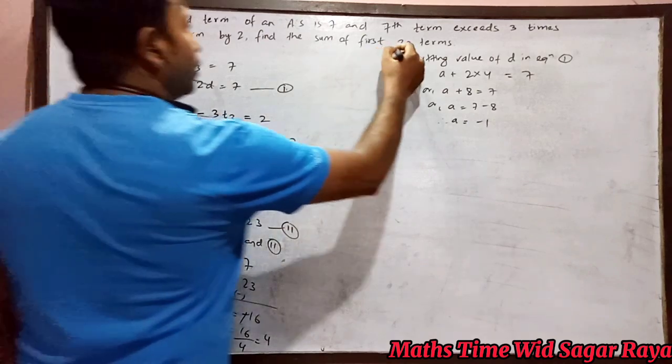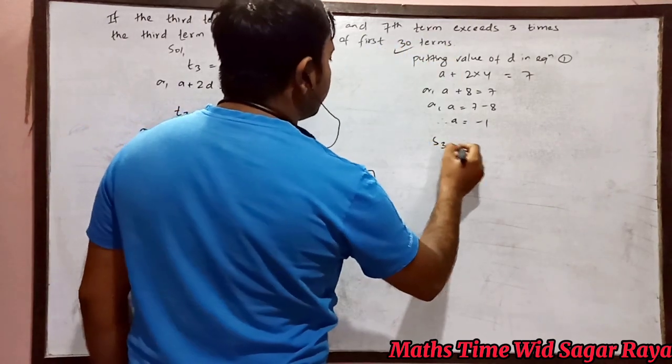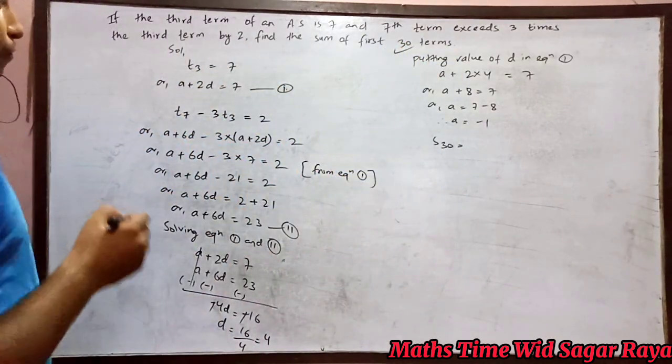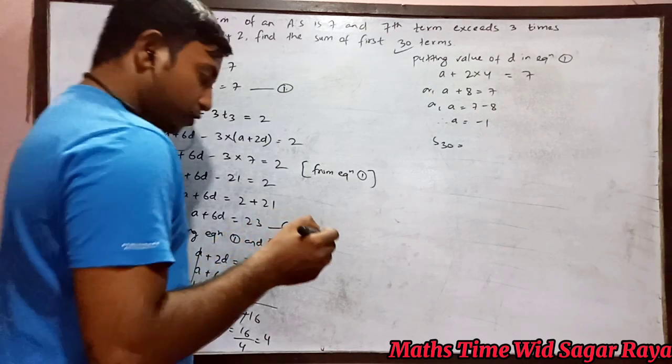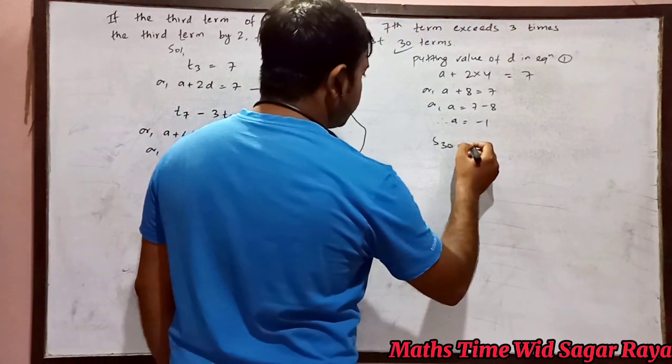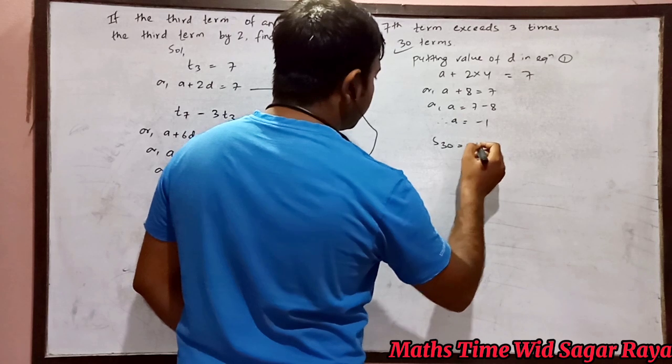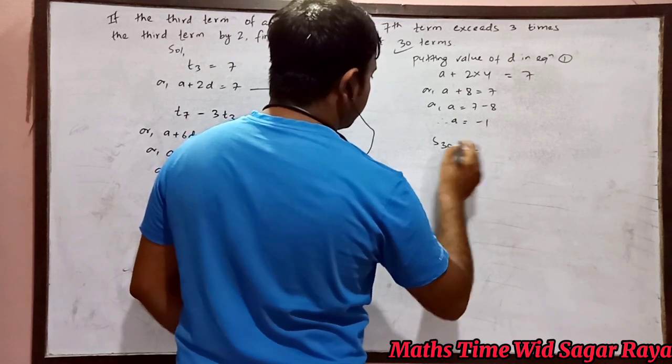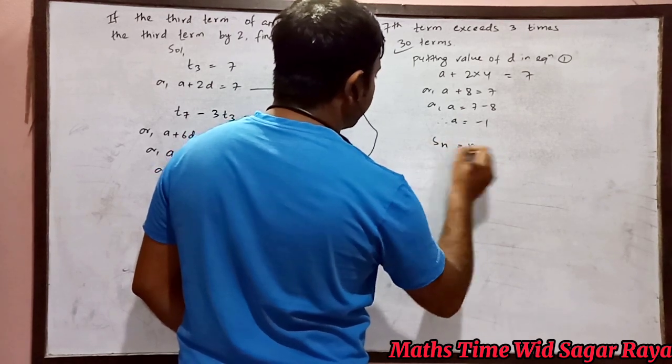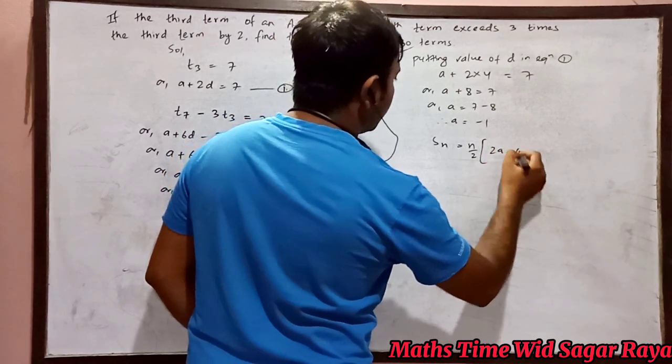But we have to find S30, the sum of first 30 terms. So S30 formula will be: use the formula Sn equals n by 2 times (2a plus (n minus 1)d).